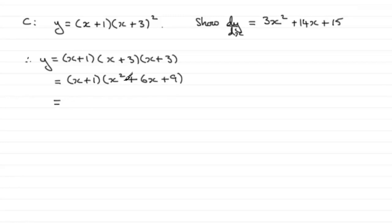So we multiply each of these three terms with the x. So we get x times x squared is x cubed. x times 6x is 6x squared, and then x times the 9 is plus 9x. Follow it through with the 1 now. 1 times x squared is x squared. 1 times 6x is 6x, and 1 times the 9 is 9.